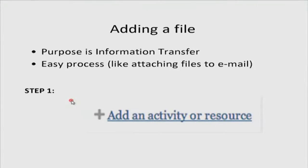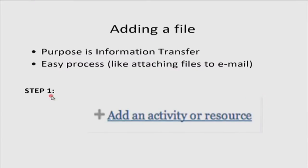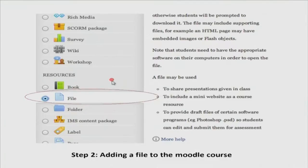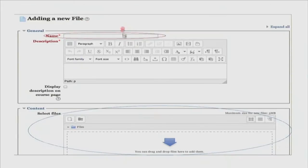First is adding a file. The purpose is information transfer — all the slides and worksheets of the workshop are uploaded in Moodle for information transfer. It is an easy process, like attaching files to an email. Step 1: there will be a button called 'Add an activity or resource' when you log in to Moodle as a teacher. Click this, then the next window shows you the options. Under resources you can see 'file' with an explanation on the side. Select that and the 'Add a new file' screen is shown.